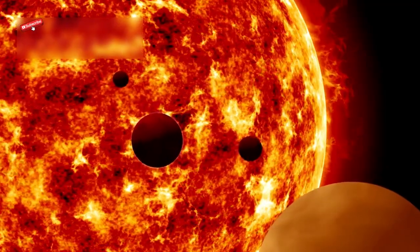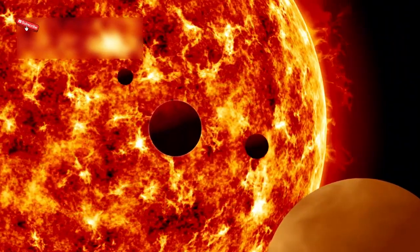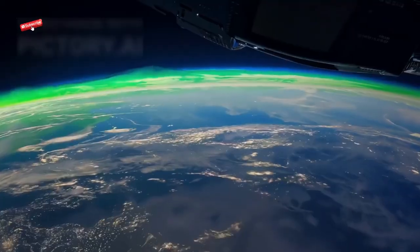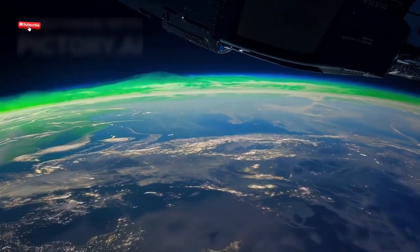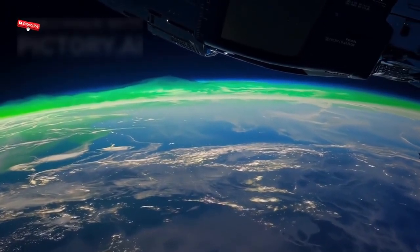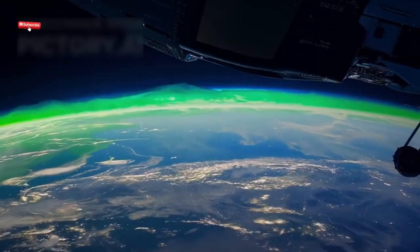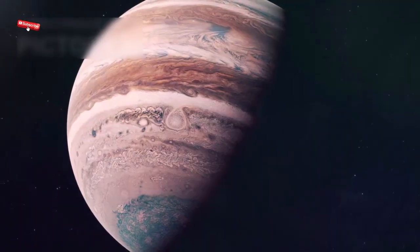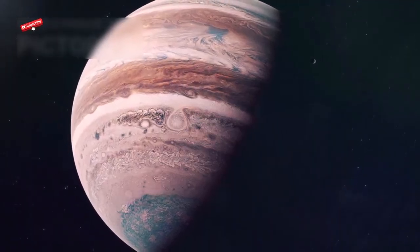Despite these struggles, the Voyagers have changed our understanding of the solar system forever. Thanks to them, we now know that Jupiter is not a calm gas giant but a violent world full of storms, lightning, and massive auroras. Voyager found hidden rings around Jupiter that no one expected.